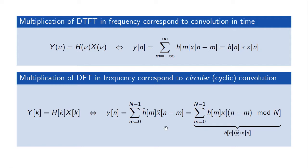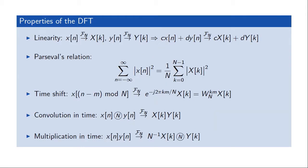This will have important implications when we later use the DFT to compute the output of a linear time-invariant system. Adding these properties to the list: a circular convolution in time corresponds to multiplication in frequency, denoted using an N in a circle for the N-point circular convolution, since the convolution operation depends on the transform length. Similarly, multiplication in time gives a convolution in frequency, with a 1 over N factor appearing in that case.